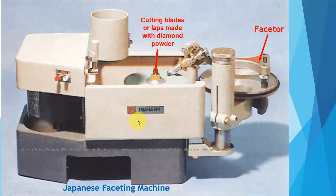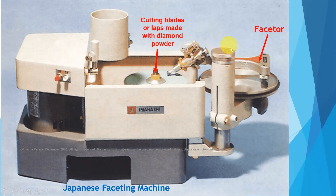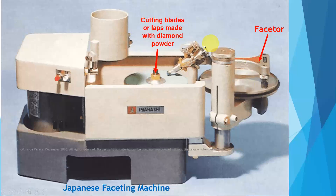Look at this Japanese machine. The faceter table is here. To move it up and down we rotate this rod — the axis screw — and then this table goes up and down to control the gem touching the cutting lap. The cutting lap is rotating horizontally, and diamond powder is applied.